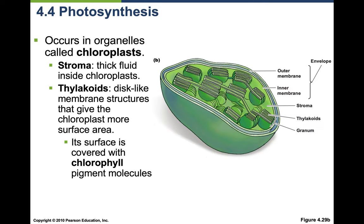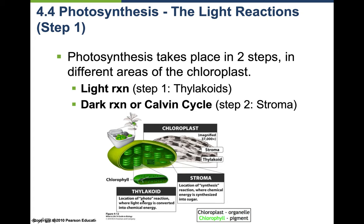Photosynthesis occurs in organelles called chloroplasts. Inside the chloroplast is the stroma — a thick fluid — and the thylakoids, which are disc-like membrane structures stacked on top of each other to provide more surface area. Each thylakoid is covered in chlorophyll, the pigment molecules that absorb light.